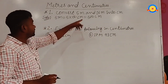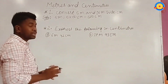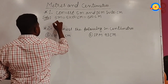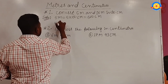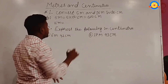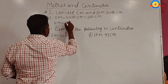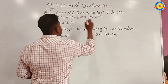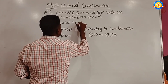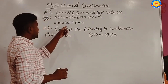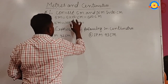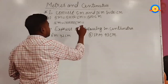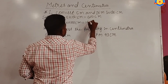Now next we have 16 meters, and we have to convert into centimeters. We write 16 meters and multiply by 100. 16 into 100 centimeters equals 1600 centimeters.